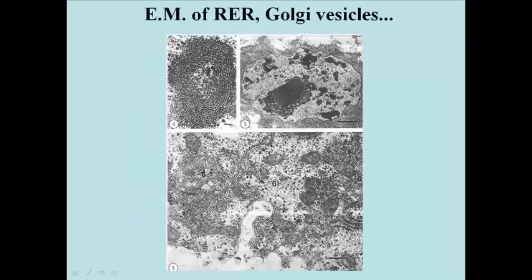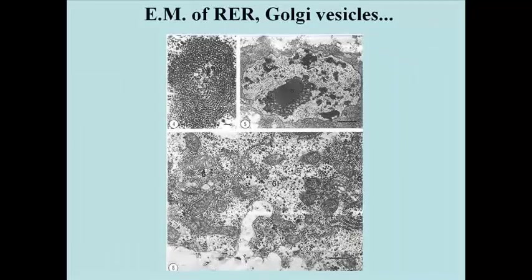The RER can assume a variety of shapes, like the whorled form at the upper left in this slide. The TEM at the upper right shows a nucleus surrounded by lots of RER, and the lower electron micrograph shows RER in the vicinity of Golgi vesicles. The association of RER with Golgi vesicles is related to the fact that proteins synthesized and packaged in the rough endoplasmic reticulum usually travel to the Golgi vesicles for further processing before they reach their final destination.